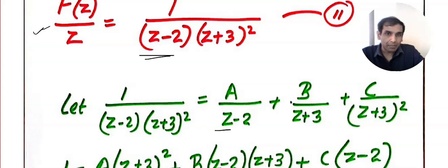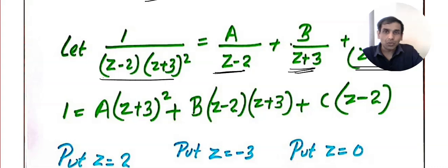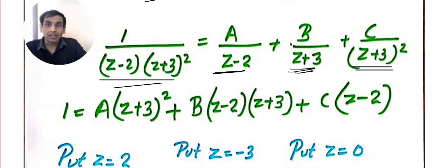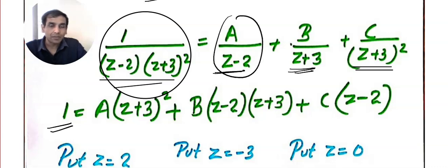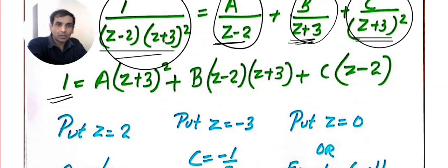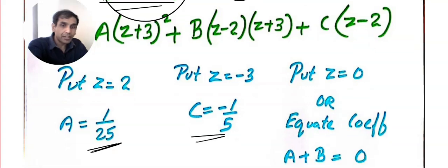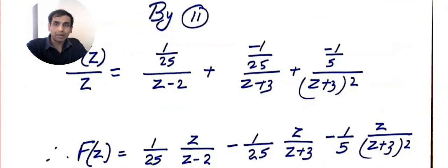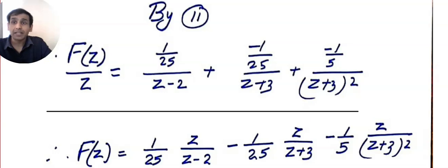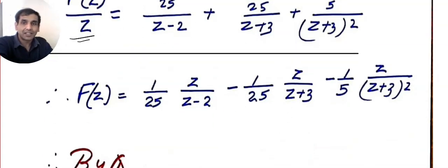I am going to call it A by z minus 2 plus B by z plus 3 plus C divided by z plus 3 the whole square. And, I am multiplying throughout by z minus 2 into z plus 3 the whole square. Imagine, I am multiplying here. I will get 1. I am multiplying it by the same stuff everywhere. So, I got 1 by 25, confirm it. Minus 1 by 5. And, I got minus 1 by 25. Anyway, I plugged it back. So, did you understand? I got F of z by z, not the function. Now, I had to multiply throughout by z.